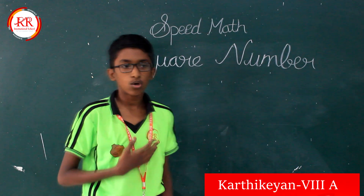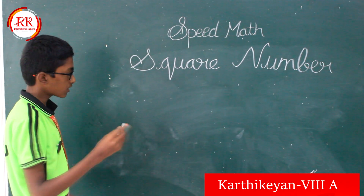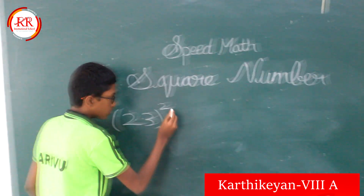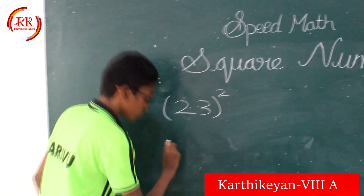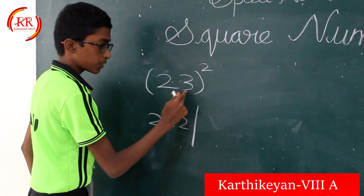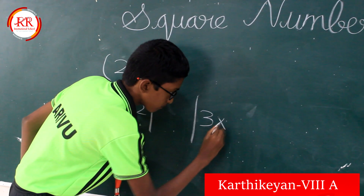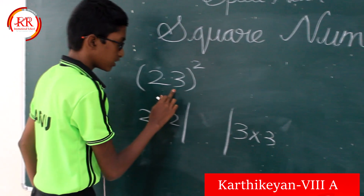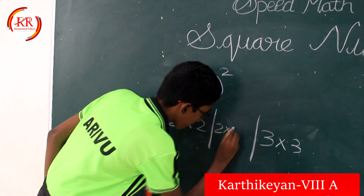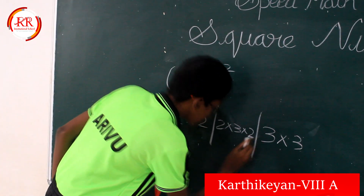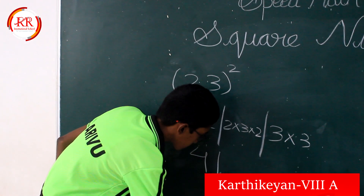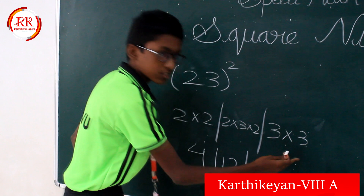Now we have to multiply 2 by 2. First we have to multiply 2 by 2. Next and last, we have to multiply 3 by 3. Then we have to multiply 3 and 2, and again multiply by 2. So 2 twos are 4. 3 twos are 6. 6 twos are 12.